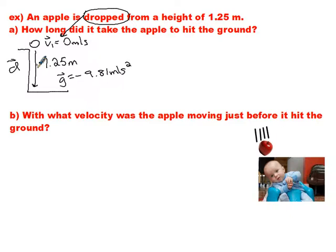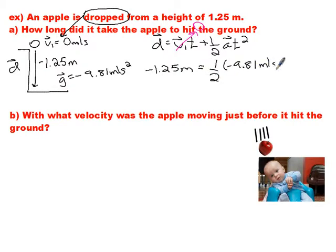All right, what do we got for formula here? Well, I need d, I need vi, I'm looking for time. How long does it take? So I think I'm going to use displacement is vit plus one-half at squared. Now the great thing about this formula is, check it out, initial velocity is 0. So no matter what the time is, if I times it by 0, it's going to cancel out. I don't even have to write that term. It's nice. All right, I can substitute in for my other values, don't forget your negative sign. There we go.